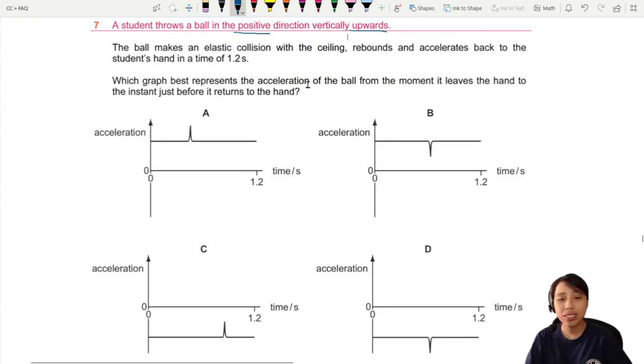Which graph best represents the acceleration of the ball from the moment it leaves your hand, goes up, come down and returns back to the hand? Go and throw some. Throw something.